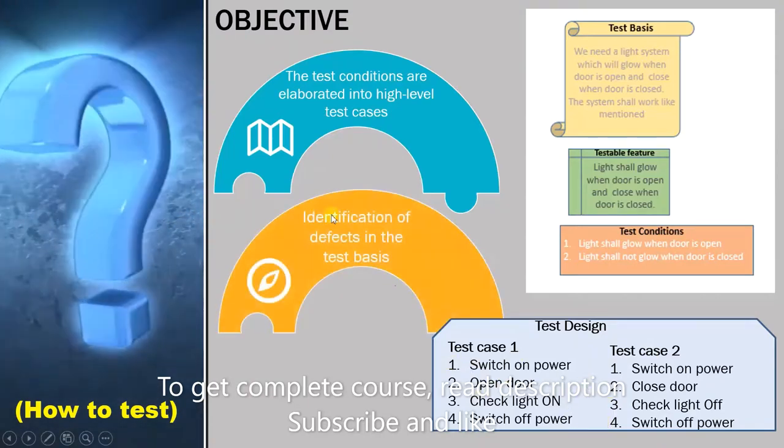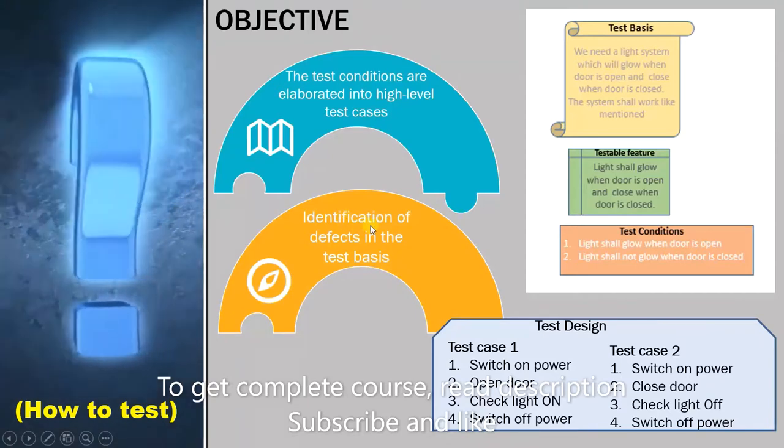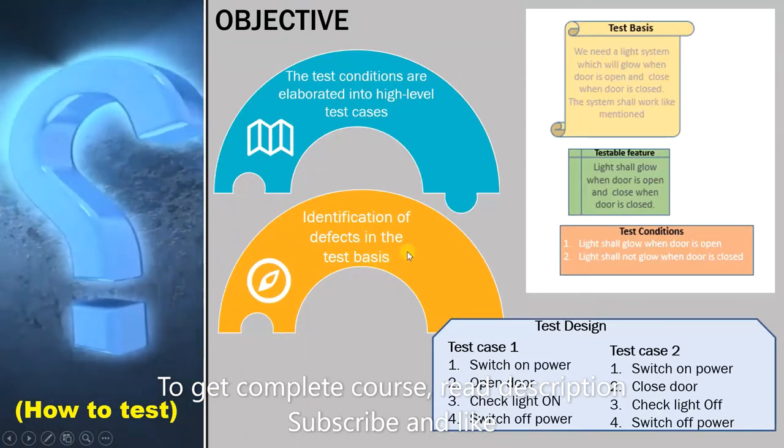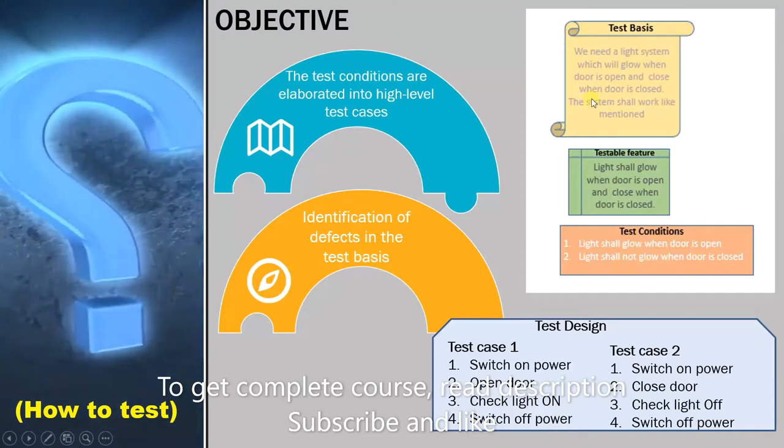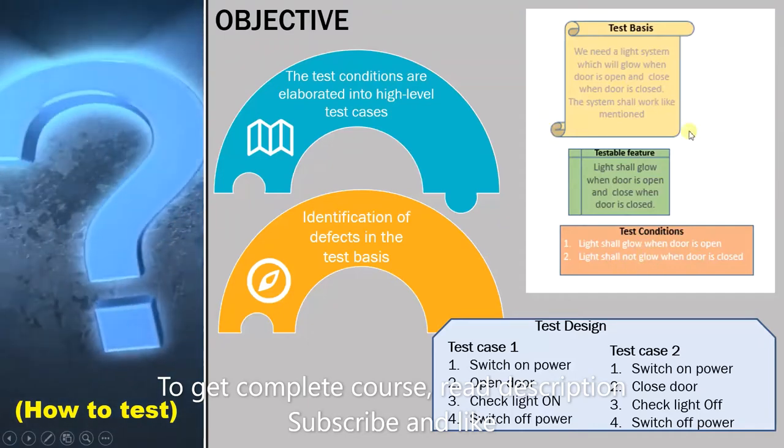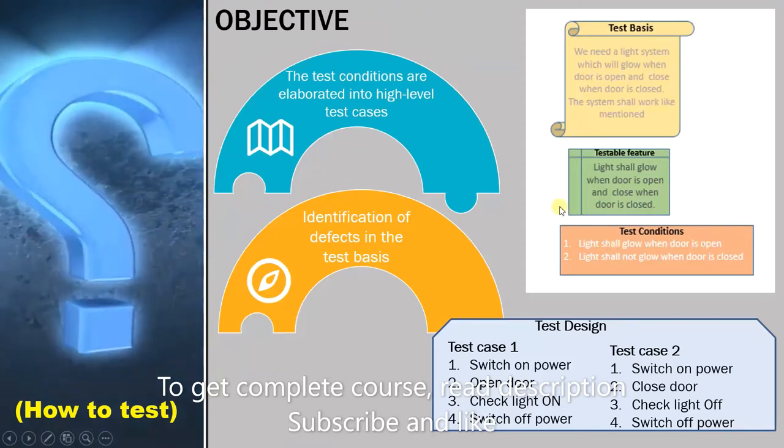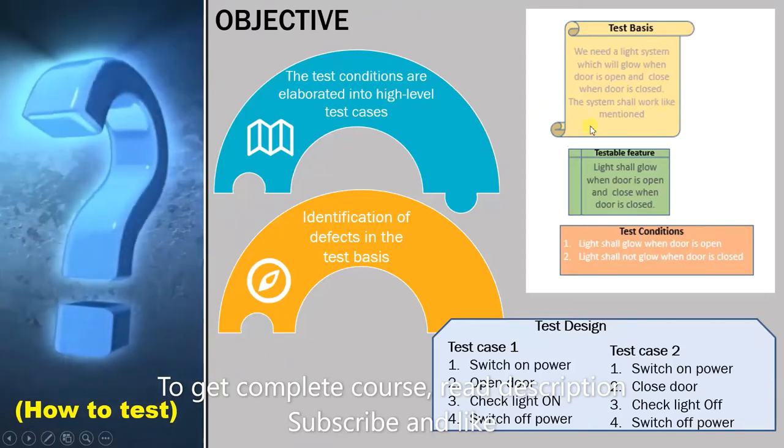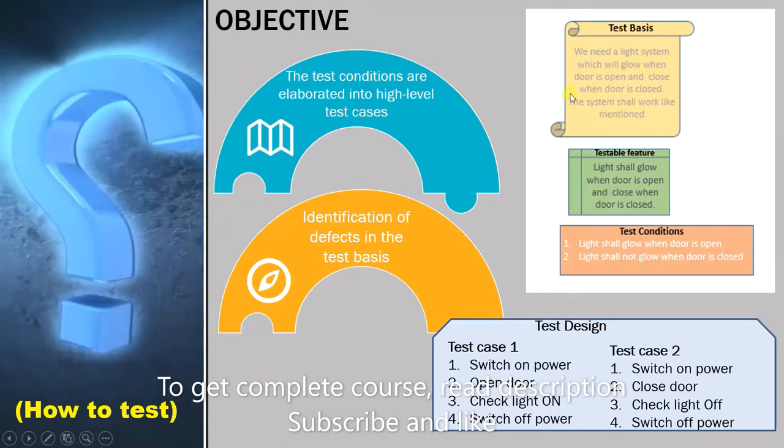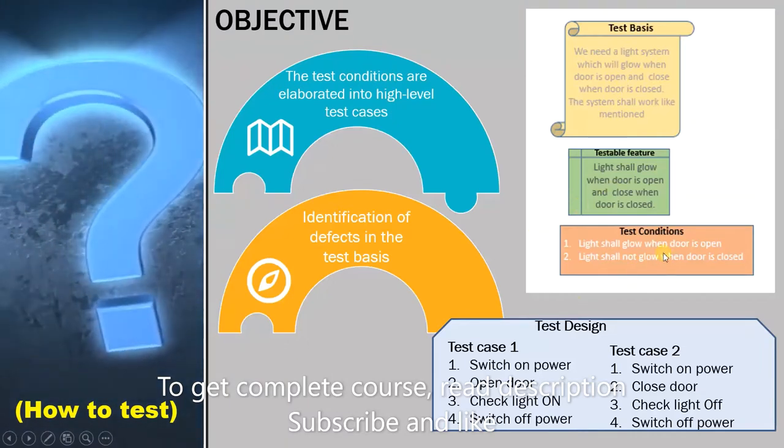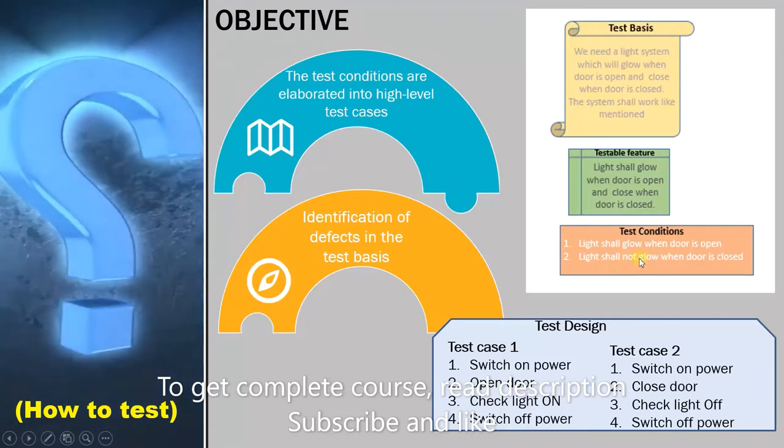The next objective is identification of defects in the test basis. We have to read the test basis and the test conditions to figure out if there are any problems with them. Test design is not just an activity to create test cases. You also have to check the documents you are referring to for errors and if you find a mistake then you have to inform the analysis team that something is missing or inaccurate here.